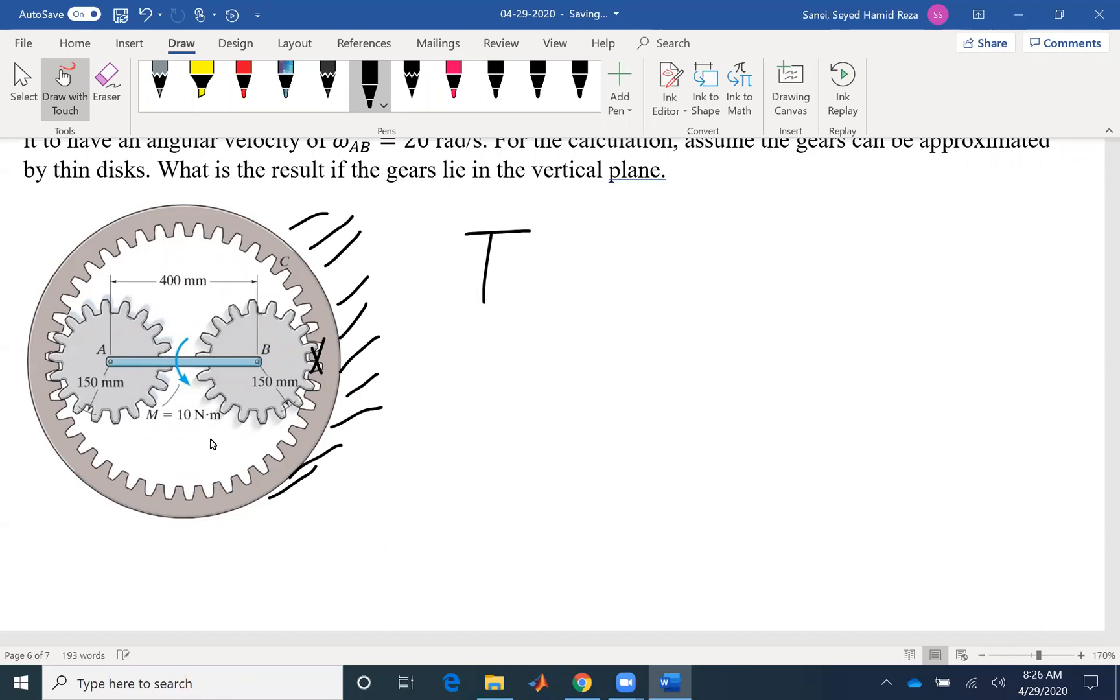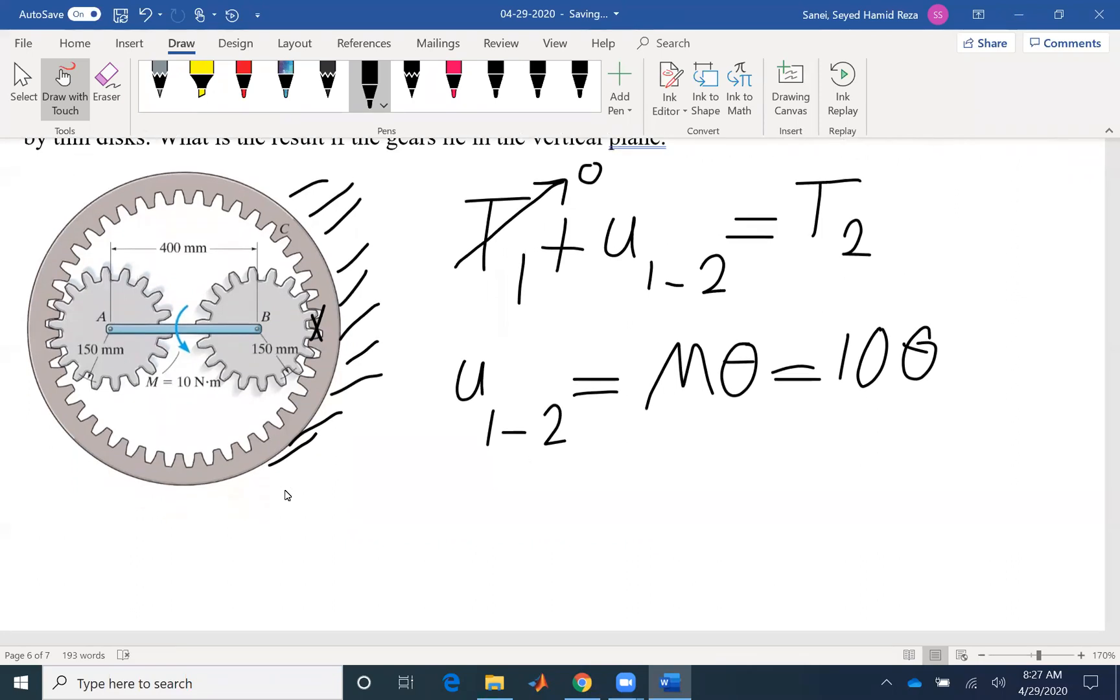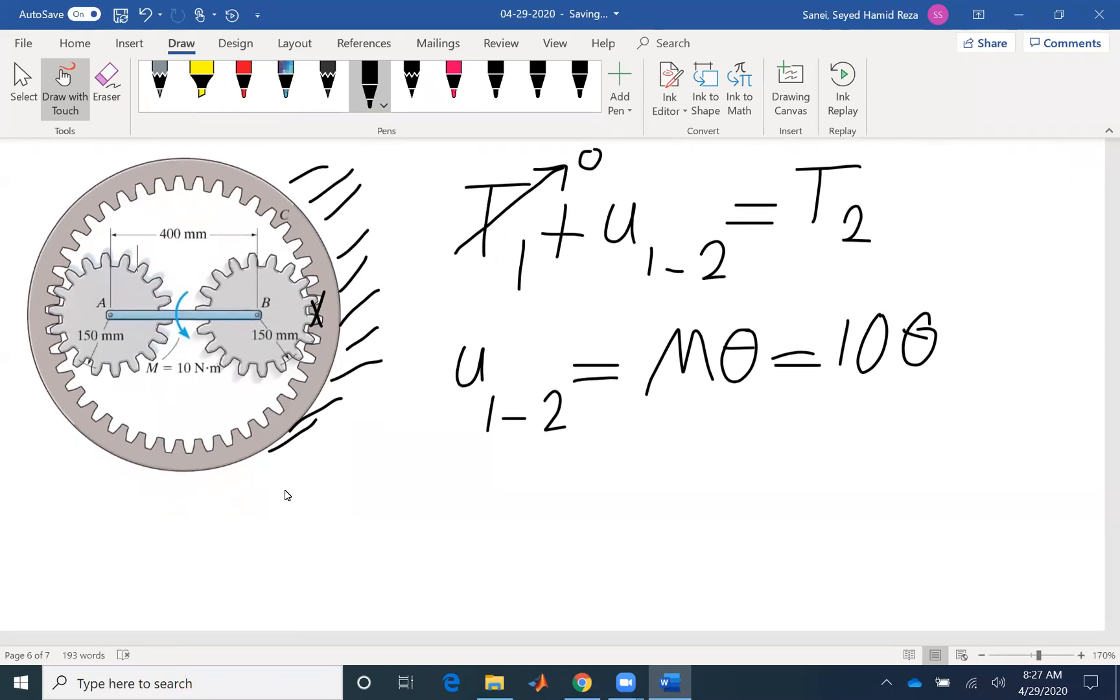Work and energy would indicate the initial kinetic energy plus the work that we do on the sample, which could be positive or negative, would give us the final kinetic energy. For this problem, it starts from rest, so the initial kinetic energy is zero. The work that is done on the sample, we don't have any gravitational work because it's on the horizontal plane. The only work would be the work of the external moment. External moment work would be M theta. So that would be 10 magnitude theta. You can see how theta would appear in our equations. And the next task is to find the kinetic energy.